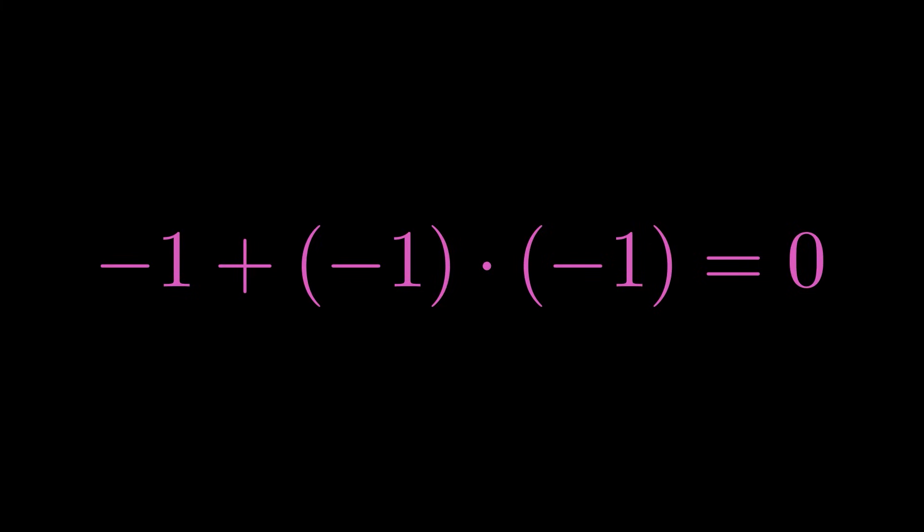We want to isolate minus 1 times minus 1 so we can move the left minus 1 to the right side. And there it is. Minus 1 times minus 1 is equal to 1.